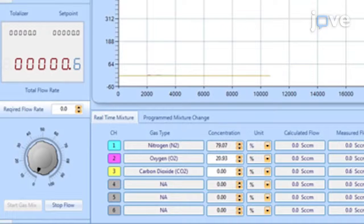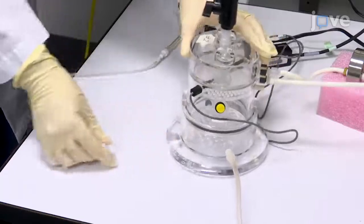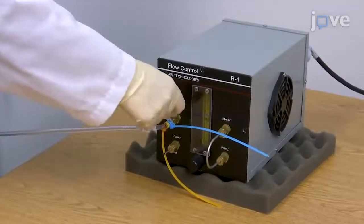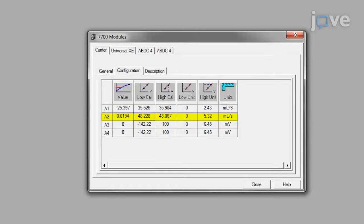To calibrate the low flow into the chamber, set the flow into and out of the chamber to zero and remove the flow tube into the chamber. Turn off the vacuum and enter a zero into the low unit cell to record the zero flow in the 7700 amplifier setup of the barometric plethysmography software.